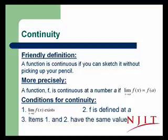So thereby we get the conditions for continuity: the limit as x approaches a of f of x must exist — that is, the curve must come in from both sides toward the same y value — and the function must be defined at a. And the third condition is that the limit and the value of the function must match at x equal a.